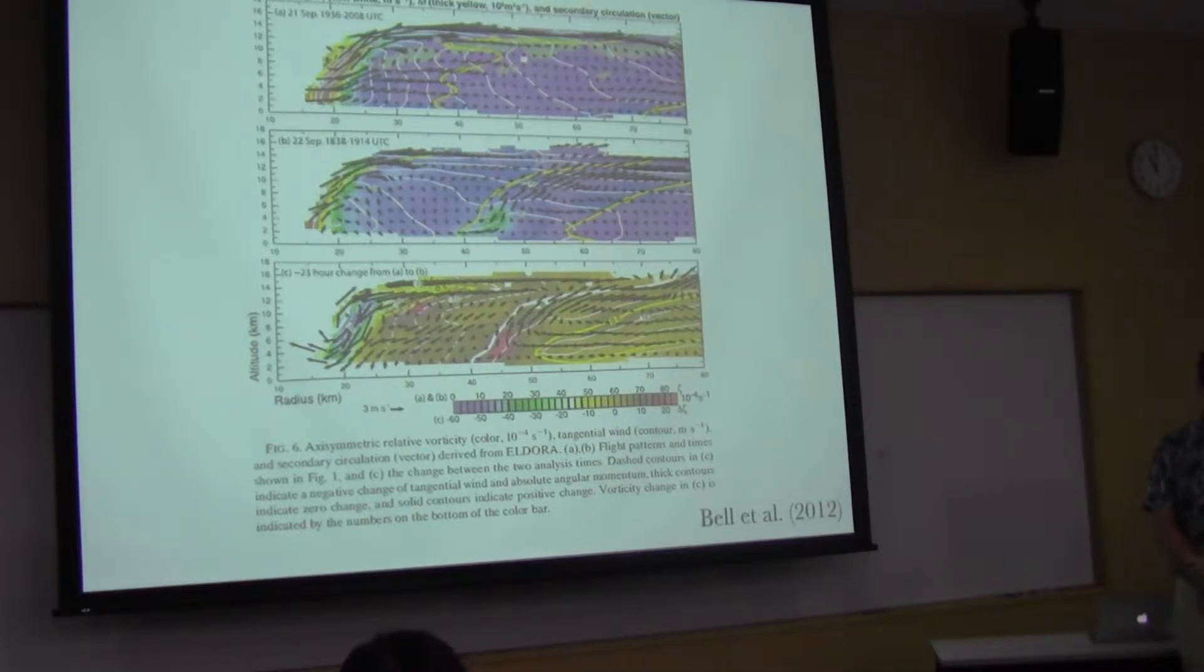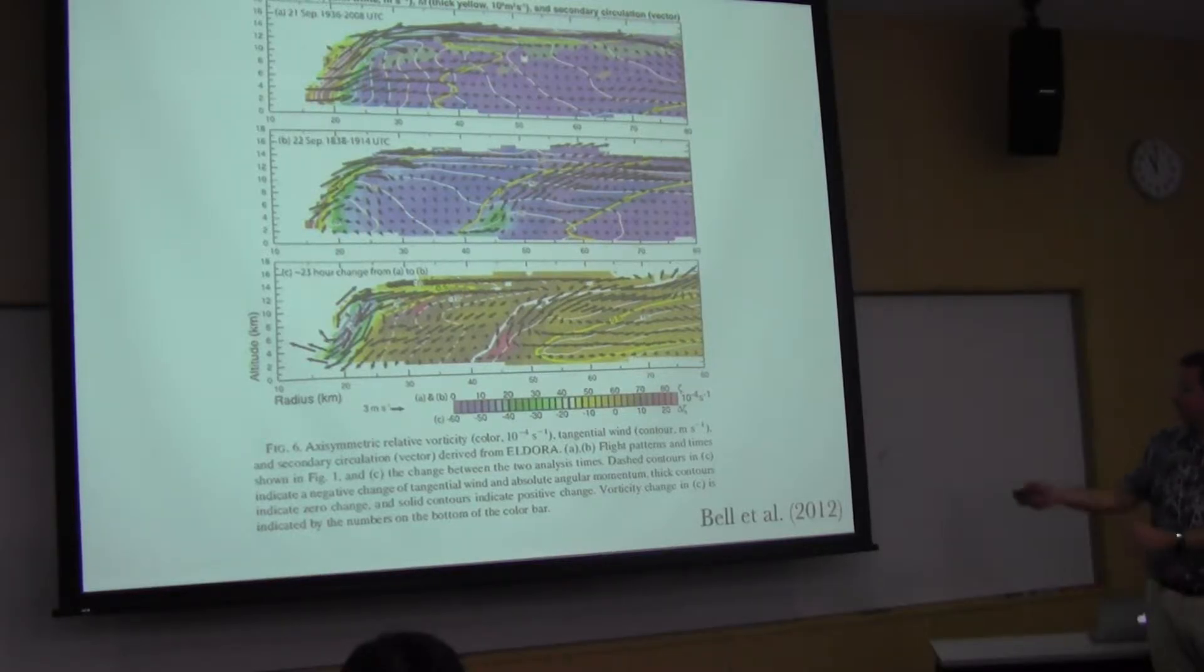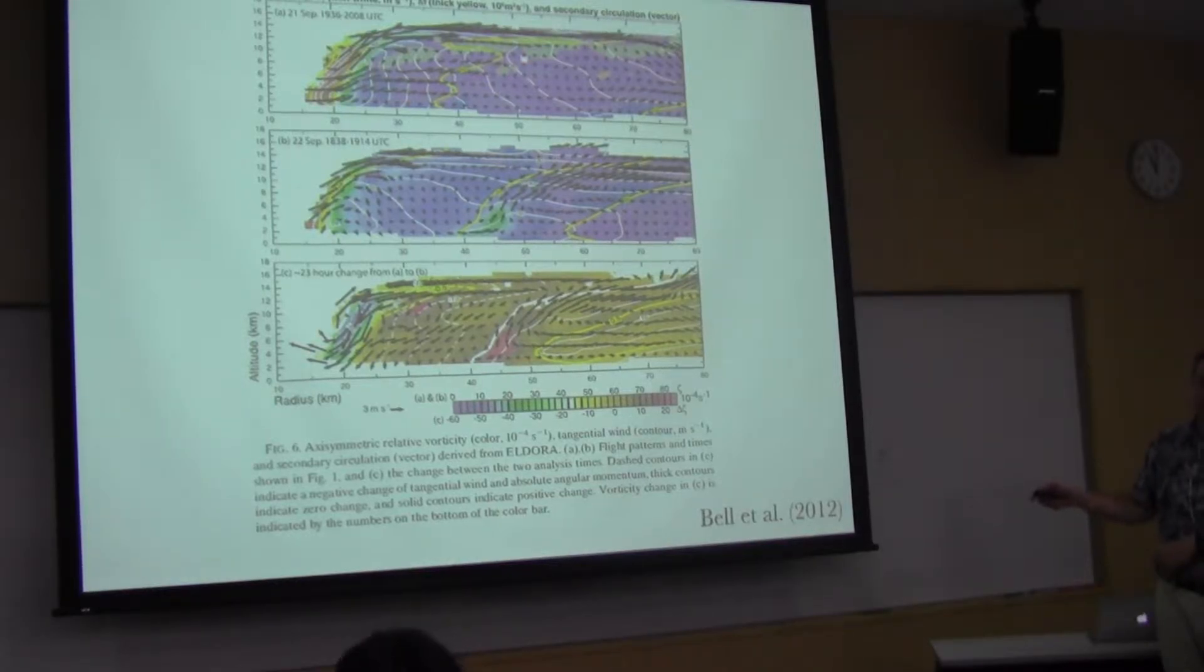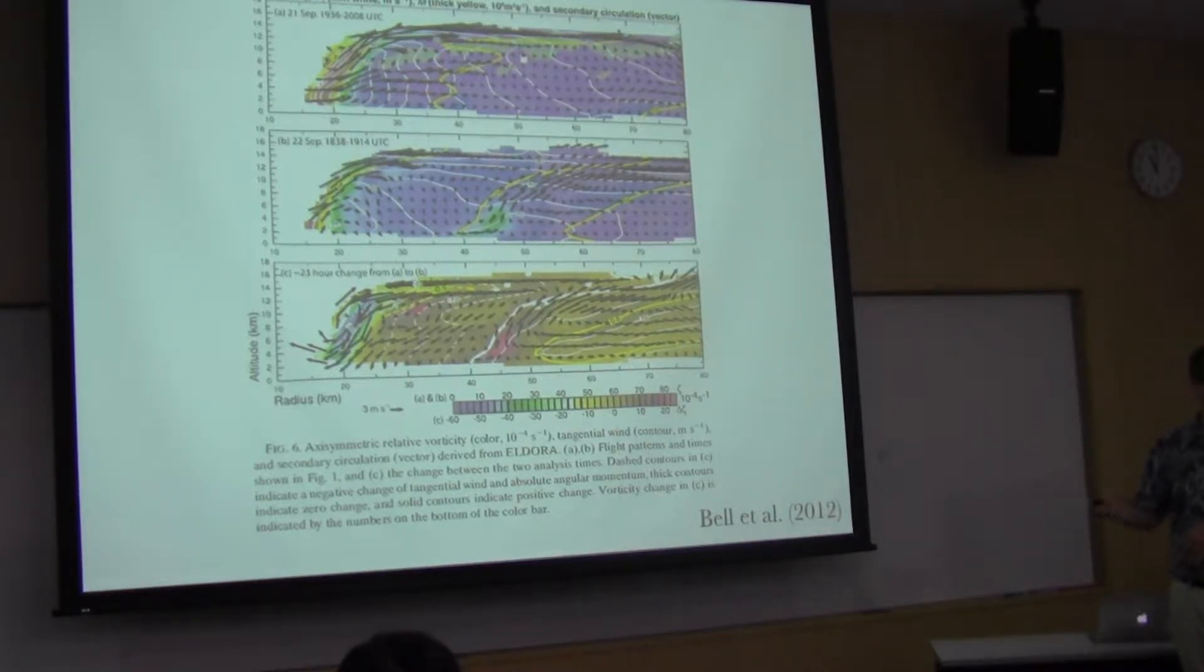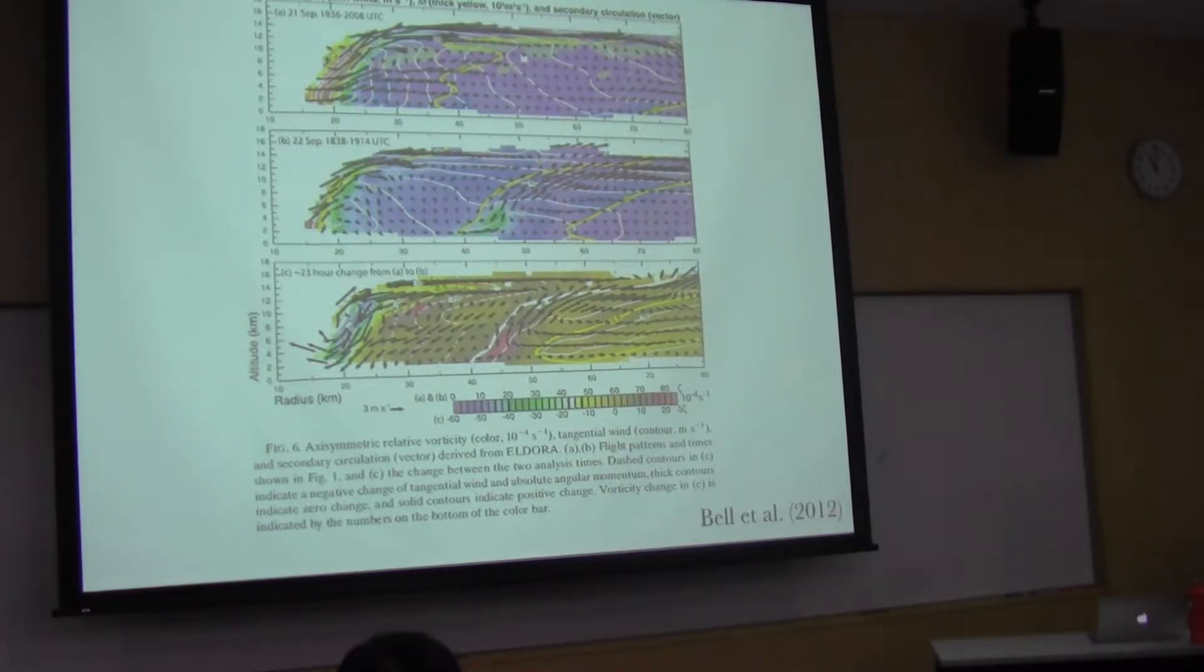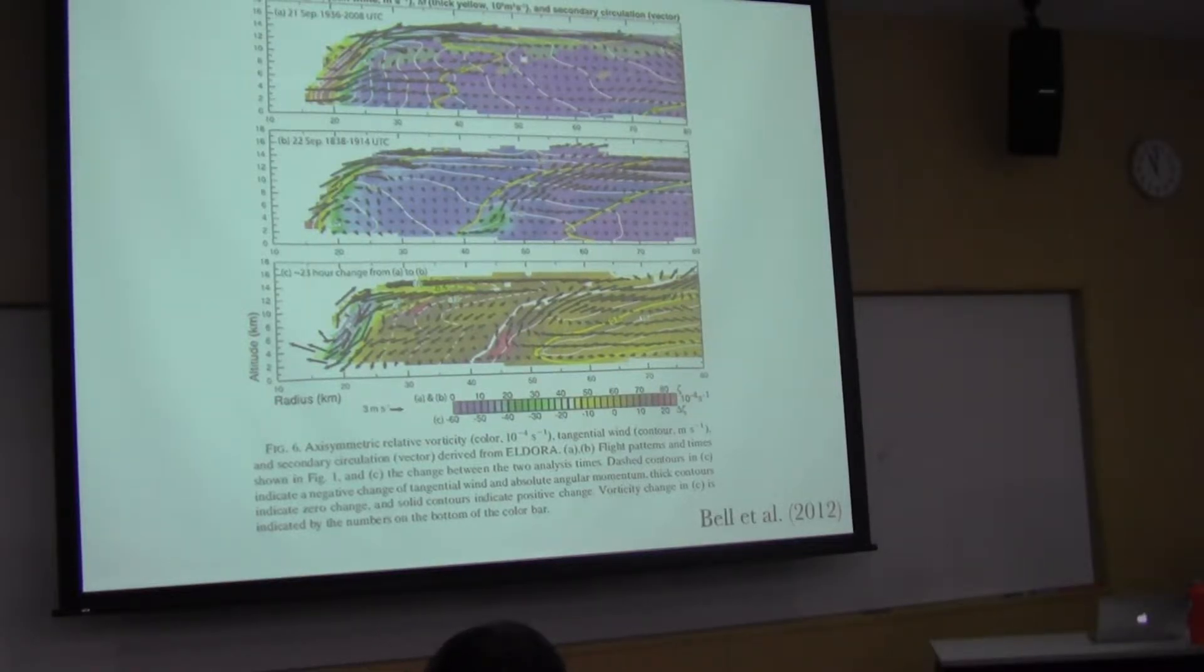We certainly see evidence of supergradient wind, and in fact I show some of that in this paper. I have a student, Shannon McElhinney, who did her master's work where we actually retrieve the supergradient wind for this case. We're working on that paper right now, but she took another job at GFDL. The challenge with aircraft observations is, once again, that we can't sample it every time that we want.